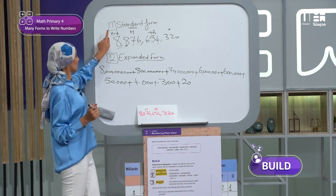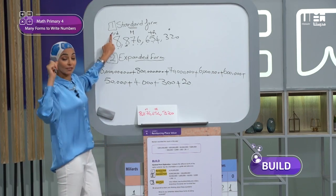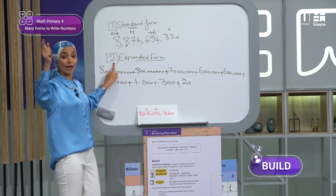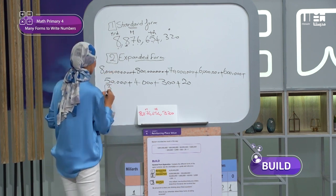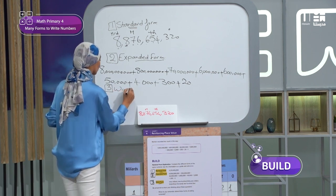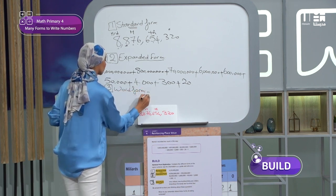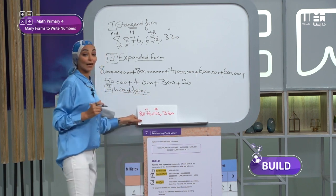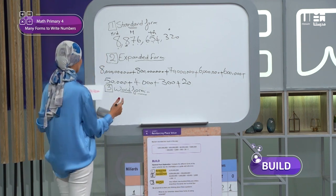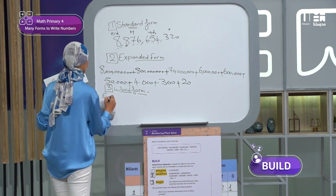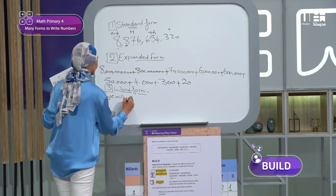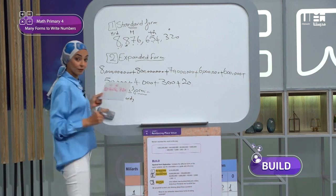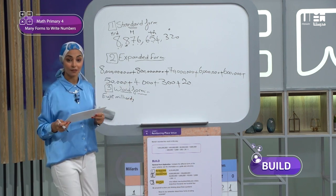Now we have here we wrote only two forms, standard form and expanded form. What about the word form? Yes, I will write now the word form. طيب, احنا اتفقنا ان الword form ده مكتبه ازاي? In letters. Let's see. Here I have eight milliard.